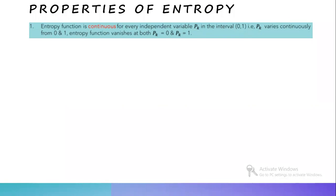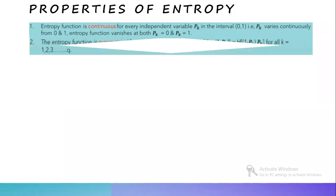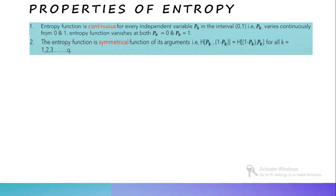The second property is that the entropy function is a symmetrical function of its arguments. It tells that H of (pk, 1 minus pk) will be equal to H of (1 minus pk, pk), irrespective of the position of the arguments, for all k equal to 1, 2, 3 up to q. This is a symmetrical function.